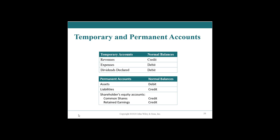To summarize: our temporary accounts are our period-specific financial statements — the income statement housing revenues and expenses, and the statement of changes of equity with dividends declared. Revenues normally carry a credit balance and expenses and dividends carry a debit balance. To reverse those, we debit revenues to close them out, credit expenses to close them out, and credit dividends to close them out. All of the balances are then booked to retained earnings.